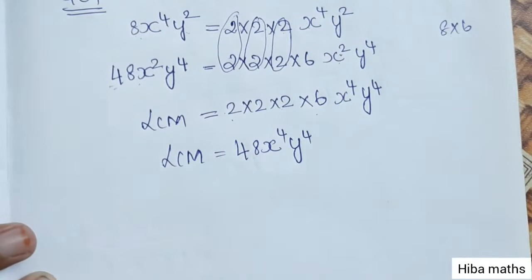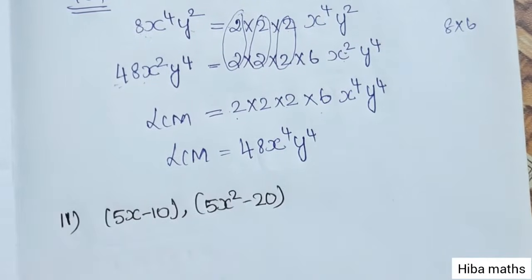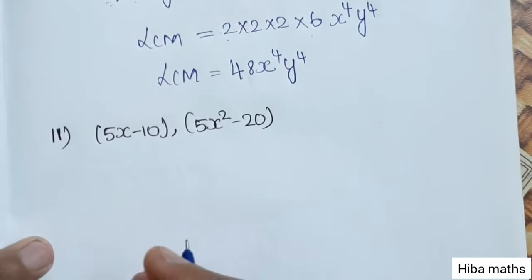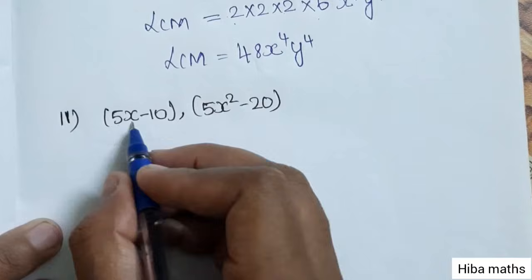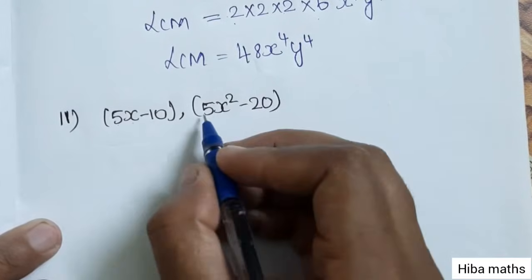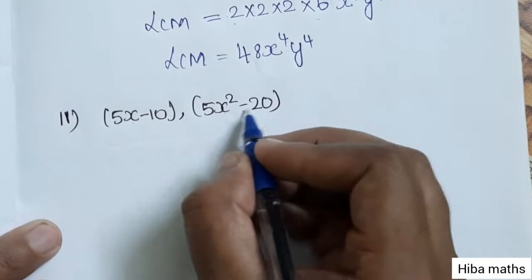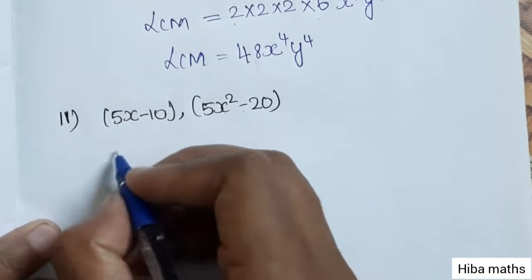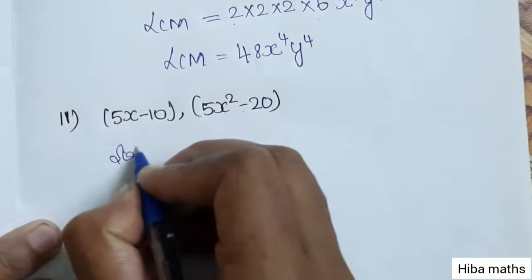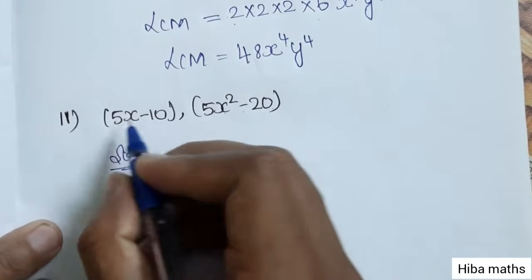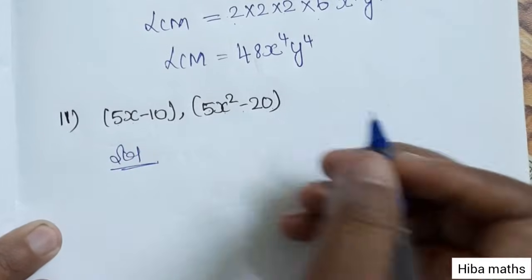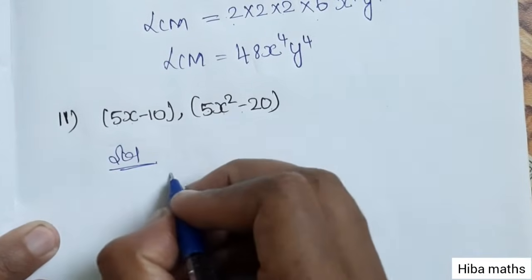Let's see the next question. The second question is: 5x minus 10 and 5x² minus 20. We take 5 as common from the first expression, giving 5(x minus 2), since 5 times 2 is 10.